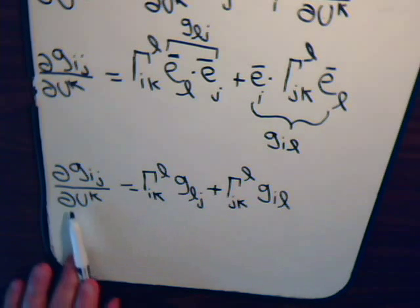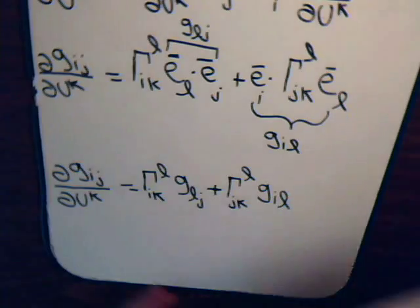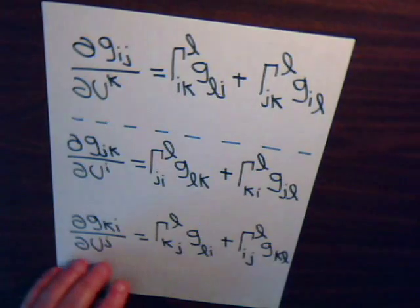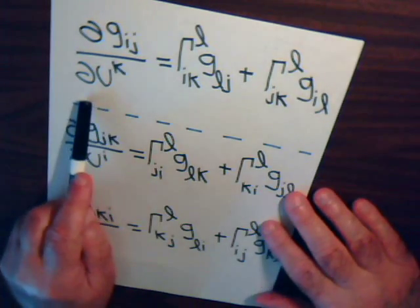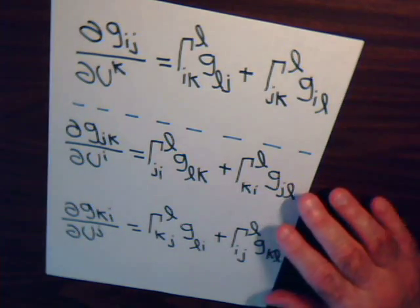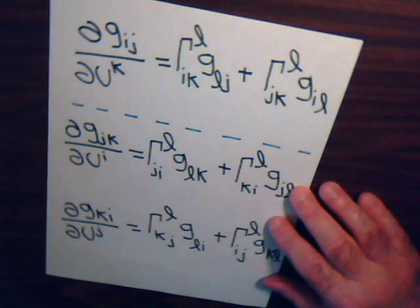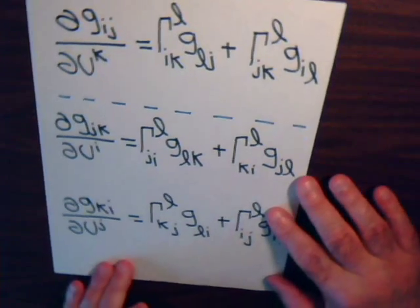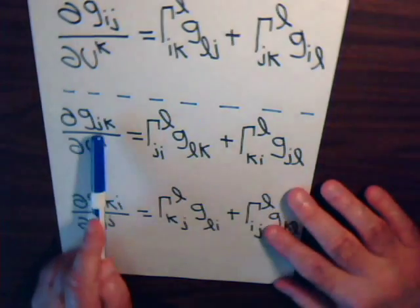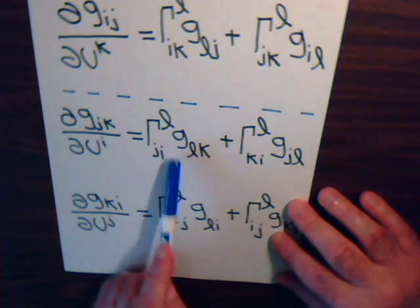Now we have this equation, and let's see what happens if we shuffle the indices around. Instead of the index pattern I-J-K, let's use J-K-I, and then K-I-J, and see what kind of expressions we get.